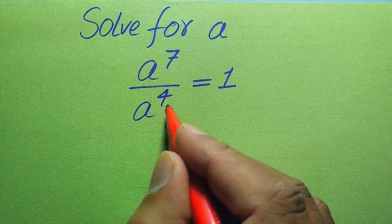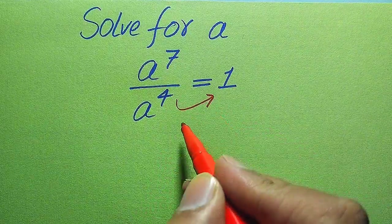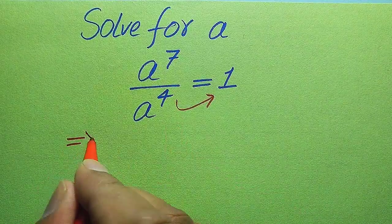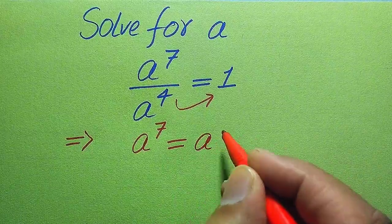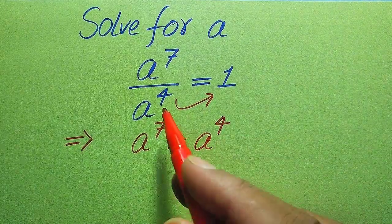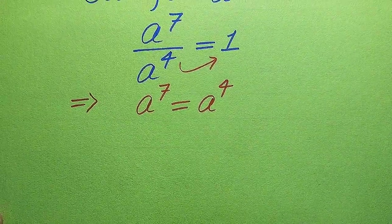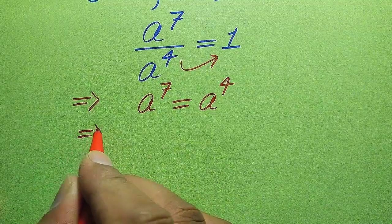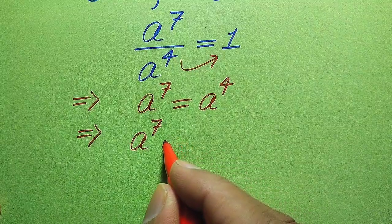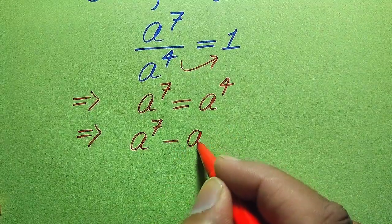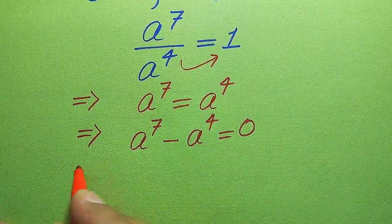The very first thing we are going to do is move a to the power of 4 to the right hand side. When we move it to the right hand side, it is multiplied by 1, and it becomes a to the power of 7 equals a to the power of 4. Now in the next step, we move a to the power of 4 from the right hand side to the left hand side, giving us a to the power of 7 minus a to the power of 4 equals 0.